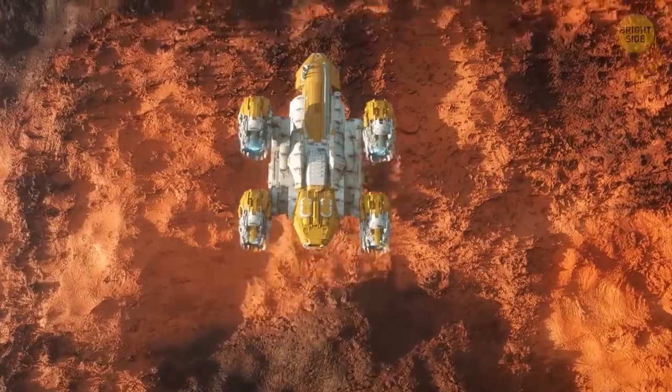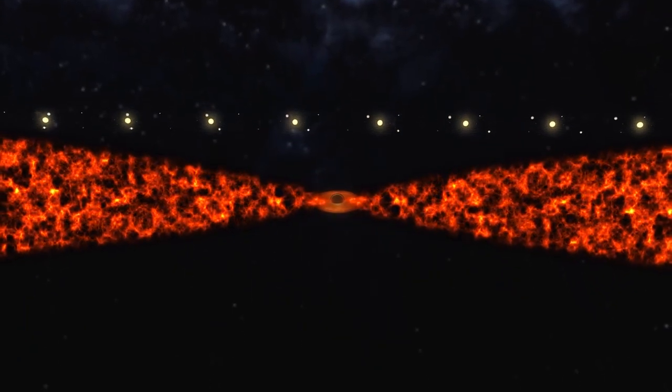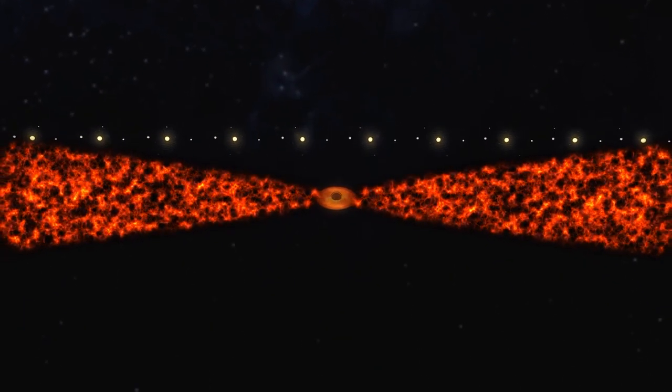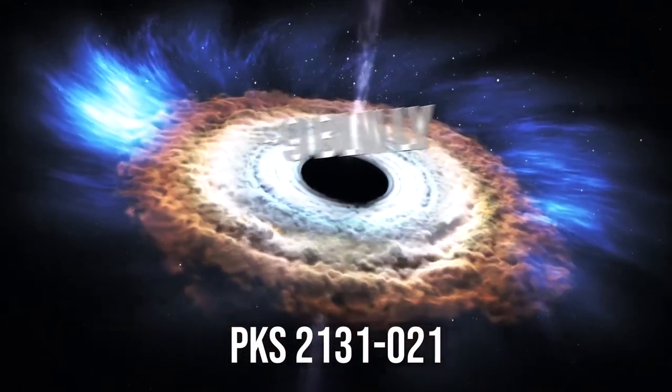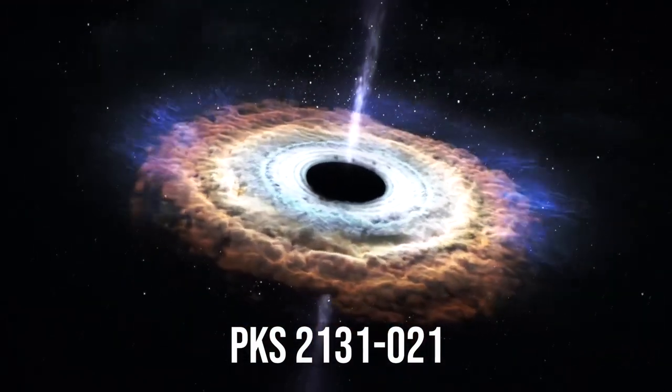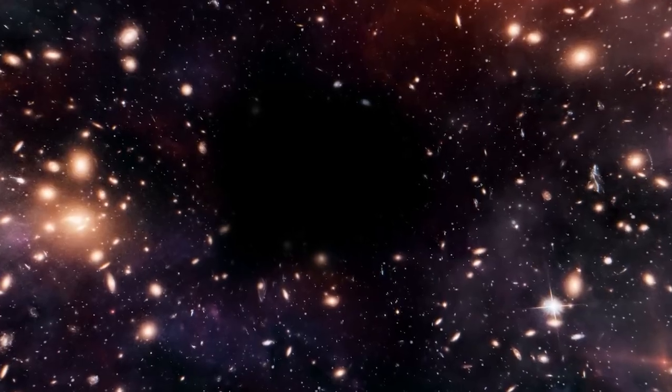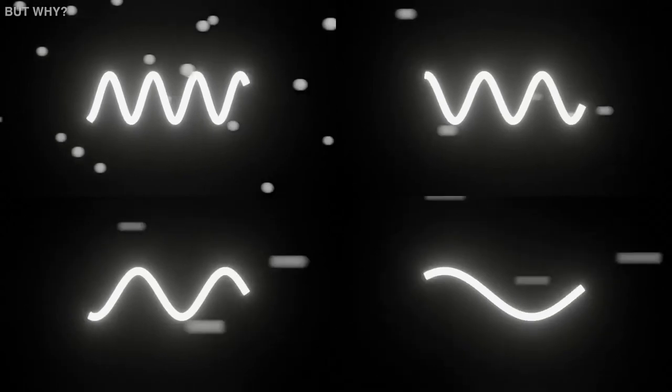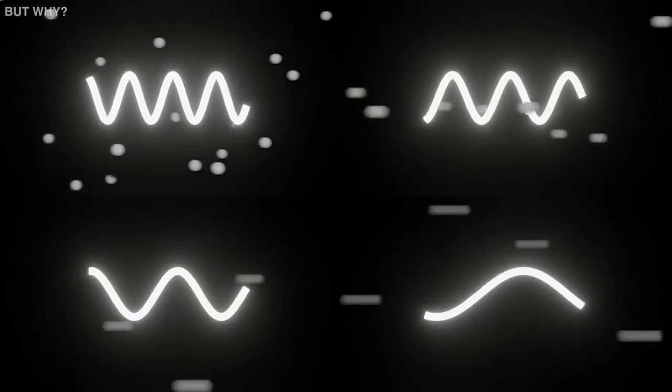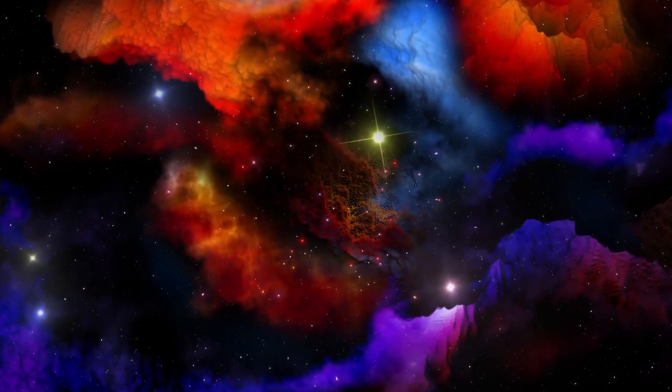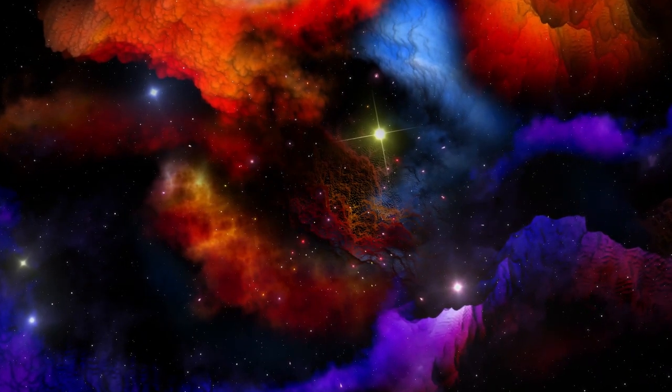If you recall Betelgeuse's great dimming that occurred in late 2019 and early 2020, you'll be aware that the status of the well-known red supergiant star has recently been a hot topic in astronomy. The unexpected dimming of this object was most likely brought on by blowing its top in 2019, during which it lost a significant portion of its surface.